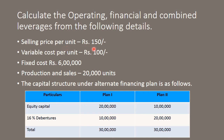Selling price per unit is given as 150 rupees. Variable cost per unit is 100 rupees. Fixed cost total is 6 lakh rupees. Production and sales would be 20,000 units.